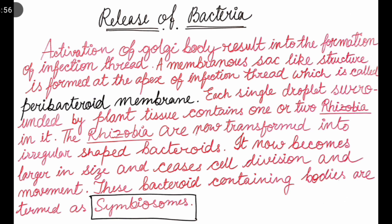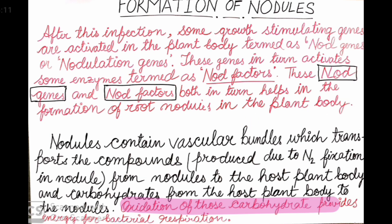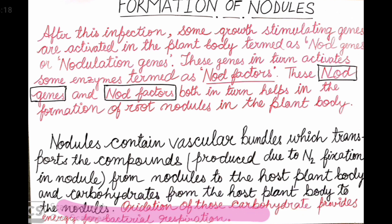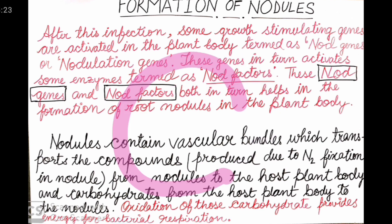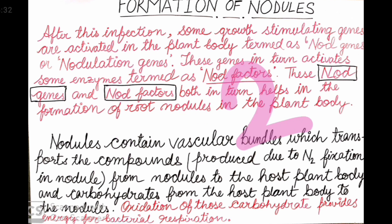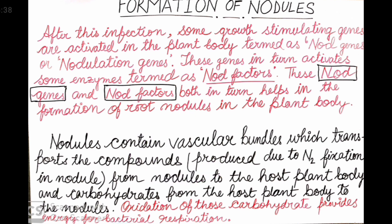The oxidation of those carbohydrates provides energy for bacterial respiration. In return, the bacteria provide the plant with fixed nitrogen compounds. This mutual exchange of carbohydrates for fixed nitrogen is what constitutes the symbiotic association between Rhizobium and the leguminous plant.